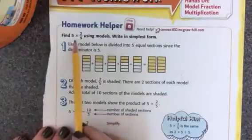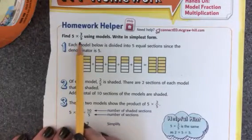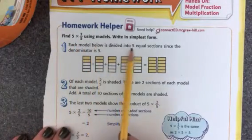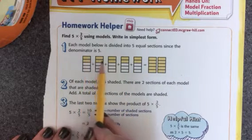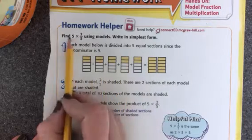Alright, this example says find 5 times two-fifths using models and then write in simplest form. So we have two-fifths here, two-fifths, two-fifths five times.